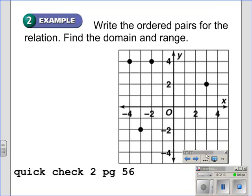Example two. In example two, it's asking us to write the ordered pairs for each relation, and find the domain and range. We're going to represent this relation as a set of ordered pairs, starting with this point right here.